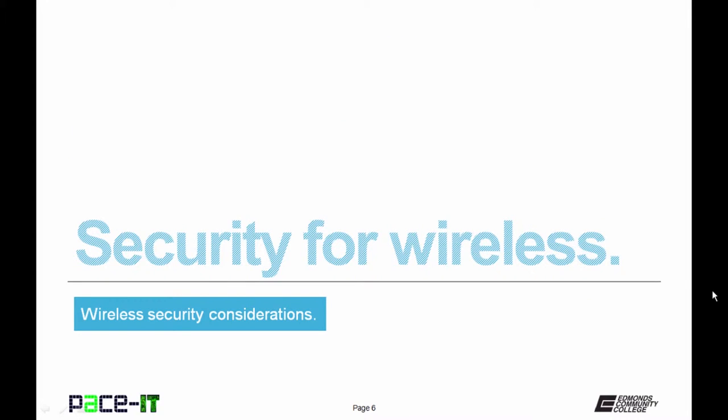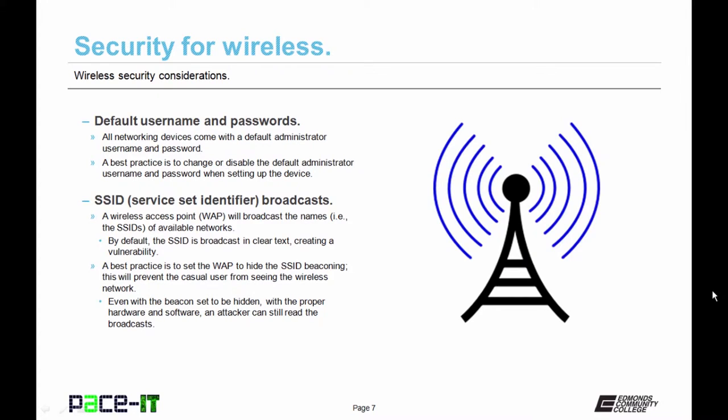Now let's move on to security for wireless. First up is default usernames and passwords. All networking devices come with a default administrator username and password. A best practice is to change or disable the default administrator username and password when setting up the device, as these defaults are well known and represent a security vulnerability. Wireless access points will also broadcast the names of available networks via SSID broadcasts, and by default the SSID is broadcast in clear text, creating a vulnerability.